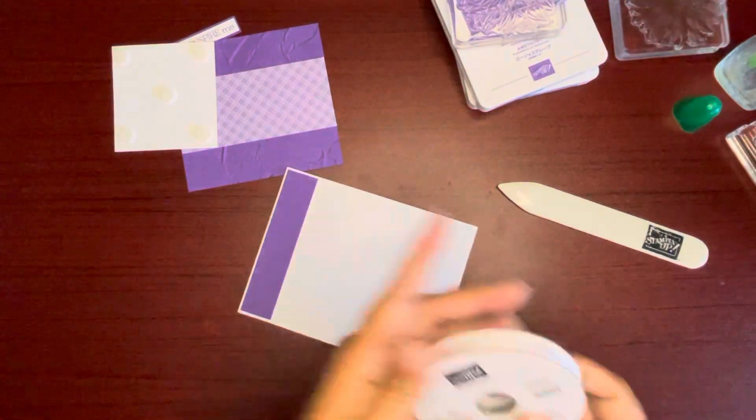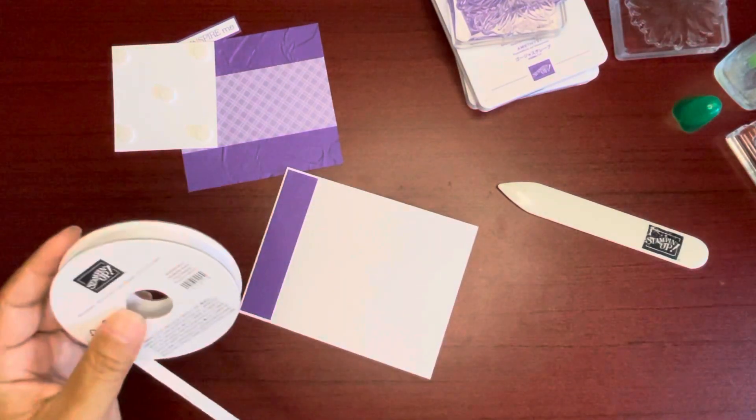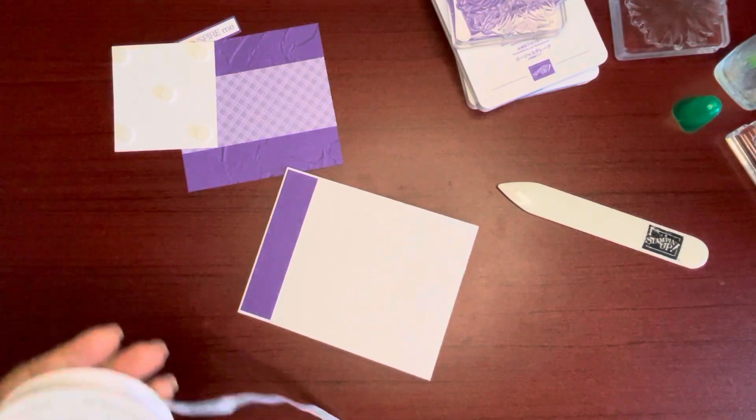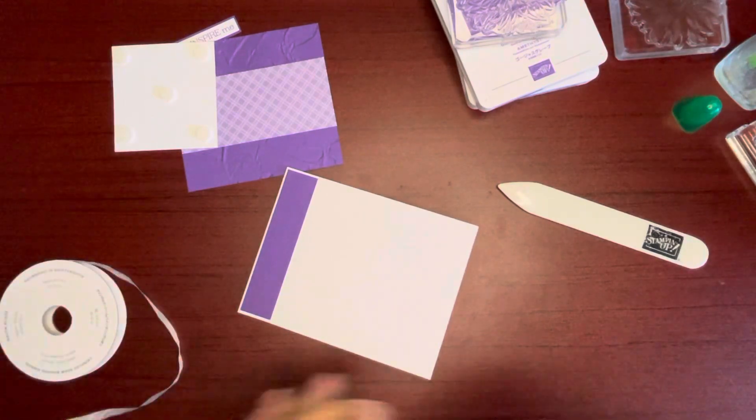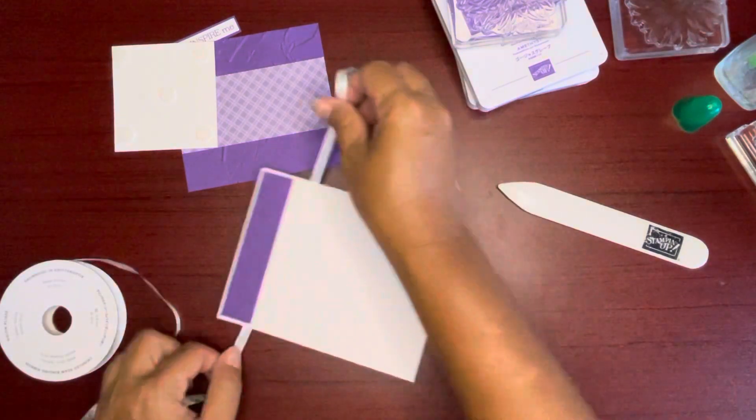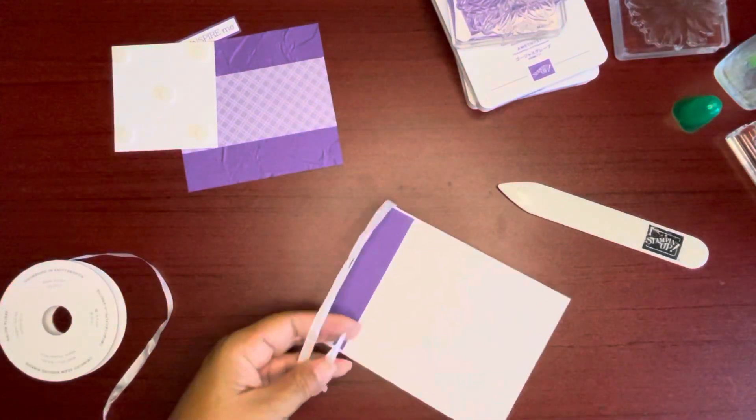And I don't know if you could see here on the side, I had Whisper White Crinkle Seam Binding Ribbon. Yes, guys, I am going to attempt to tie a bow on here.